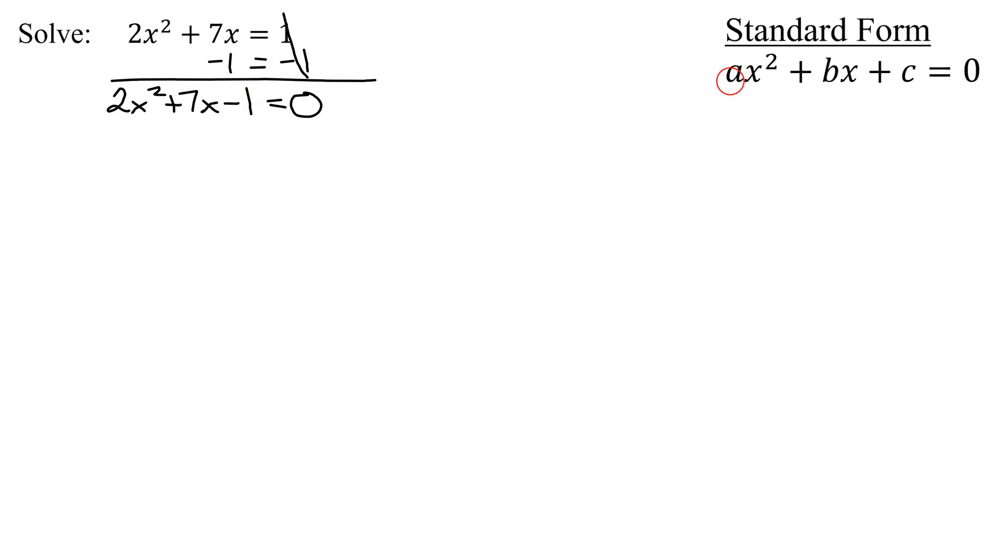So I need to find the values for a, b, and c. a is the coefficient of the x squared term, so a is 2. b is the coefficient of the x term, it's 7. c is the constant term, so it is negative 1.